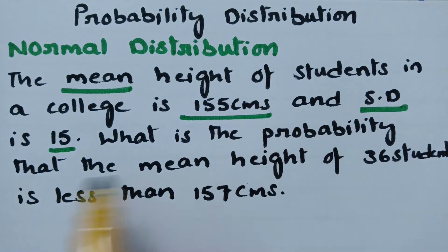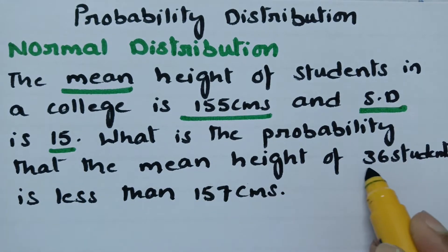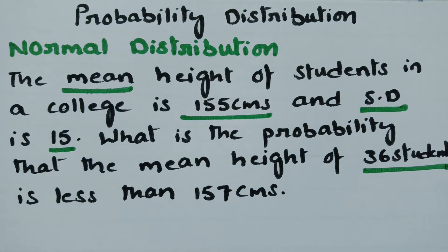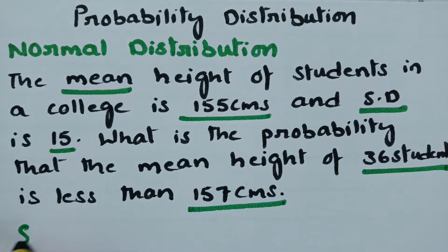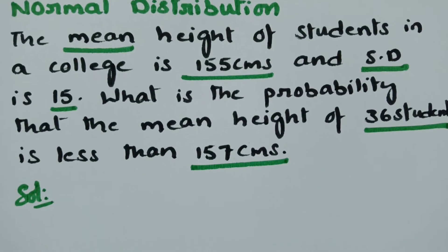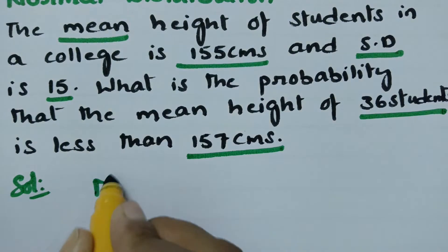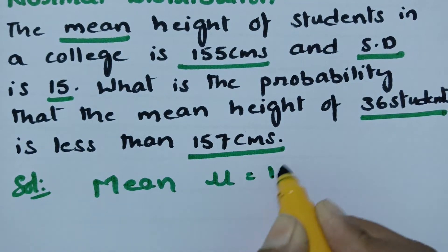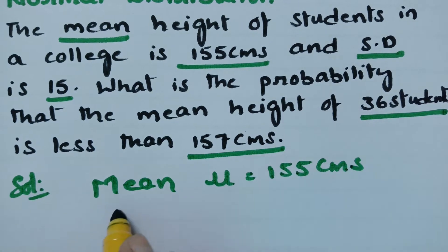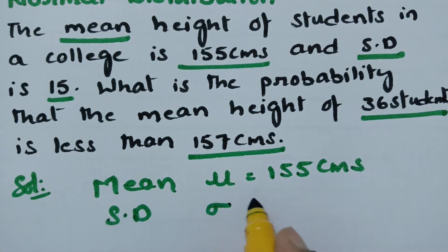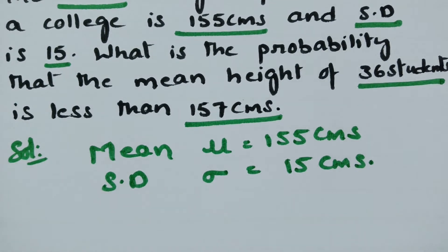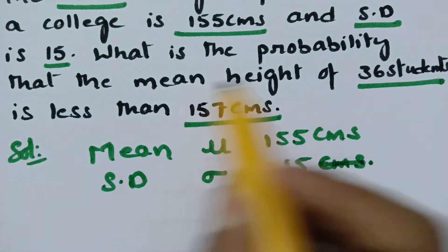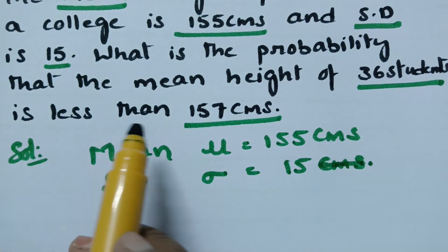What is the probability that the mean height of 36 students — therefore, number of students is equal to 36 — is less than 157 centimeters? First of all, what is given? The mean value is given: mu is 155 centimeters and the standard deviation sigma is 15 centimeters. We need the probability that the mean height of 36 students is less than 157.